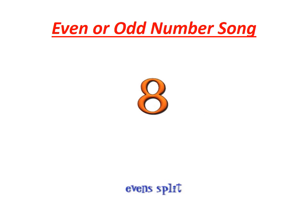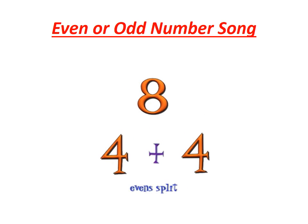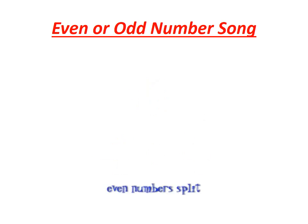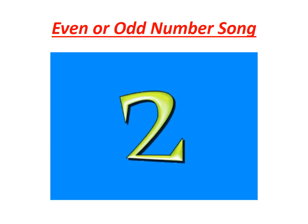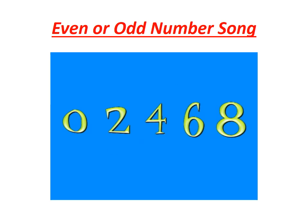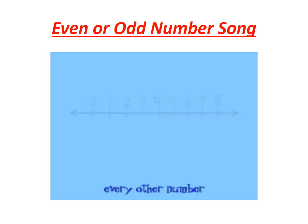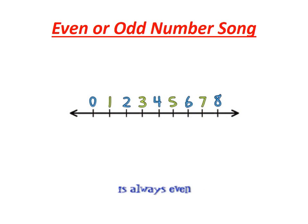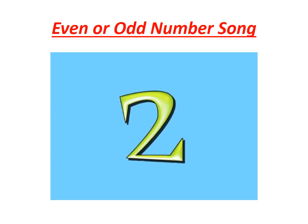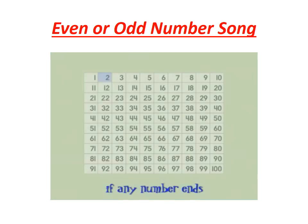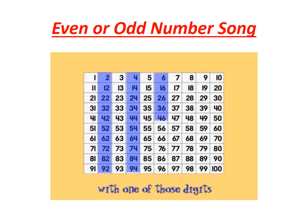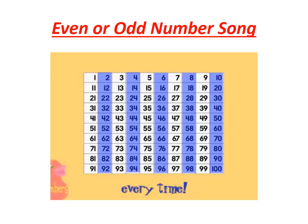Even numbers — split them up, even split, down the middle. Even numbers split right down the middle. Half and half make even numbers every time. Say this rhyme: every other number is always even, every other number on the number line. If any number ends with one of those digits — 0, 2, 4, 6, 8 — then that number's even every time.